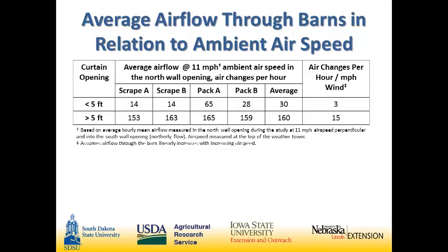We have about the same amount of airflow going through. Directing your attention to this last column — air changes per hour per mile per hour of wind speed — under a closed curtain situation we're getting about three air changes per mile per hour of wind speed, whereas under an open curtain situation we're getting about 15. This really demonstrates what a powerful tool that curtain is for producers. You can really adjust it on a cold or hot day to get air moving across the cattle. This is our north wall air speed, not our south wall. We had a lot more variability in the south wall because of that back drafting Erin was talking about.